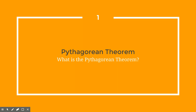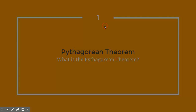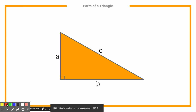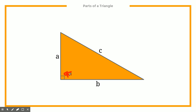So first, let's talk about the Pythagorean theorem and what it is. The first thing to note is that when we're talking about the Pythagorean theorem, we are talking about right triangles. A right triangle is a triangle that has a 90-degree angle on one of the angles. And the Pythagorean theorem can be used only when we're talking about right triangles that have that 90-degree angle.